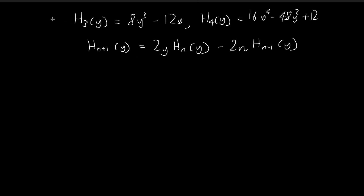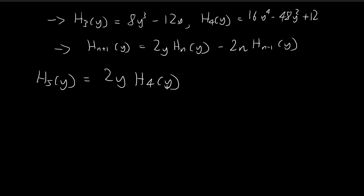I've written the results down — these are the results we got from the last problem, h3 and h4 — and now we're going to use this recursion formula to derive h5 and h6. Using the recursion formula, h5 of y is equal to 2y times h4 of y minus 2 times 4 times h3 of y. In this case, n is equal to 4, so we just substitute 4 for n.